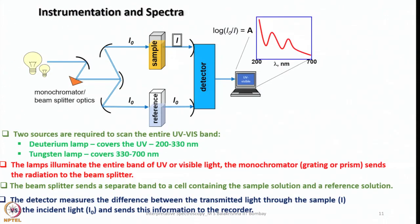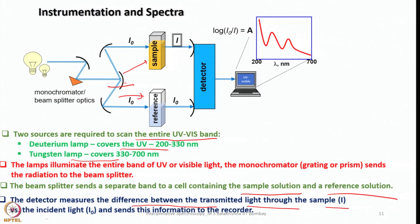This is how a typical instrument looks. Two sources are required to scan the entire UV-visible band: the deuterium lamp covers 200 to 300 nanometers (UV region) and the tungsten lamp covers 300 to 700 nanometers (visible region). The lamp illuminates the entire band; the monochromator sends radiation to a beam splitter, which sends a separate band to a cell containing sample solution and a reference solution. The detector measures the difference between the transmitted light through the sample versus the incident light and sends this information to the recorder, giving us the spectrum.